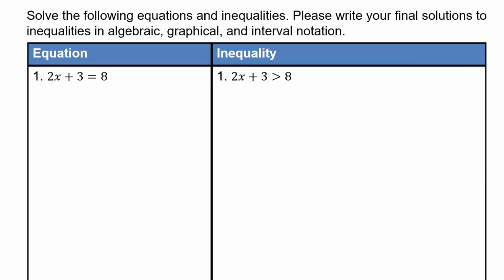Alright, assuming you've come back, let's take a look and see what you got. So first, 2 times x plus 3 equals 8. We're going to undo the plus 3 by subtracting 3 from both sides, which gives us 2x equals 5, or x equals 5 halves, because to undo the 2 times x we have to divide by 2.